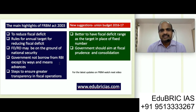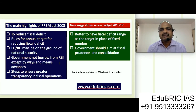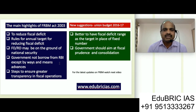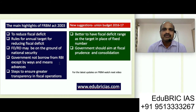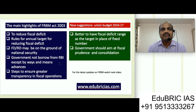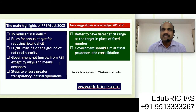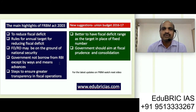The highlights of the FRBM Act: number one, to reduce fiscal deficit; number two, rules for annual targets — that is, how much is to be decreased — revenue deficit has to be decreased by 0.5% and fiscal deficit has to be decreased by 0.3%. We also need to ensure that unless and until expenditure is related to social services or national security concerns, let us not have fiscal deficit and revenue deficit at all. The main objective of this Act is to gradually reduce this deficit over a period of time.